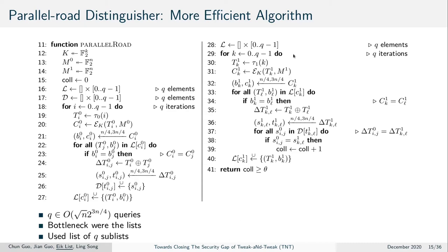For the tuples encrypted from m1, we apply a similar procedure: encrypt, split the ciphertext into larger and smaller parts, look up the larger part first, and retrieve the smaller part and tweak of previous matching entries. Only if both larger and smaller parts match do we derive the tweak difference, split it, and look in our difference table for all m0 pairs with that tweak difference, comparing the remaining bits to confirm a full match.